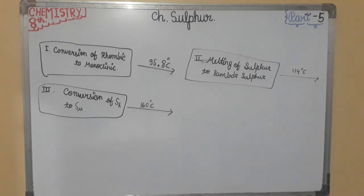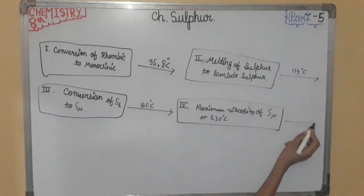Fourth is Maximum Viscosity of Microsulphur at 230 degree Celsius. As temperature rises to 230 degree Celsius, almost all the S8 molecules are broken to long chains, increasing the entanglement and the viscosity becomes maximum.